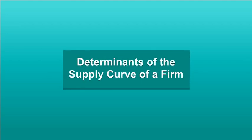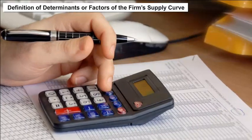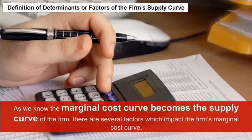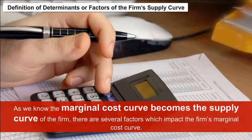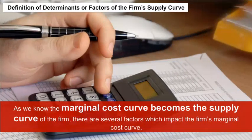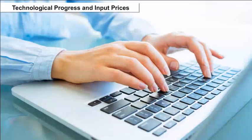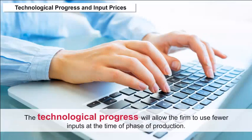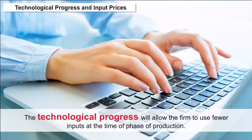Determinants of the Supply Curve of a Firm. Since the marginal cost curve becomes the supply curve of the firm, there are several factors which impact the firm's marginal cost curve. These are the determinants of the firm's supply curve.